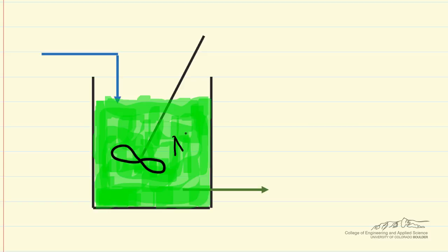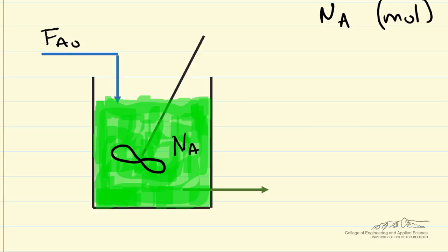For the number of moles within the reactor, Na has units of moles. FA0 is the molar flow rate into the reactor with units of moles per time, say per second, and FA is the molar flow rate out, also with units of moles per second. V is the total volume of the reactor contents, and CA is the concentration of component A in the reactor. This is also the concentration of component A leaving the reactor — we're assuming this is well stirred, so they have to be the same concentration.